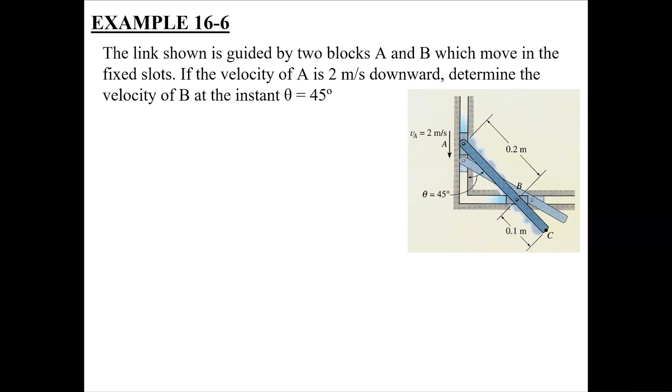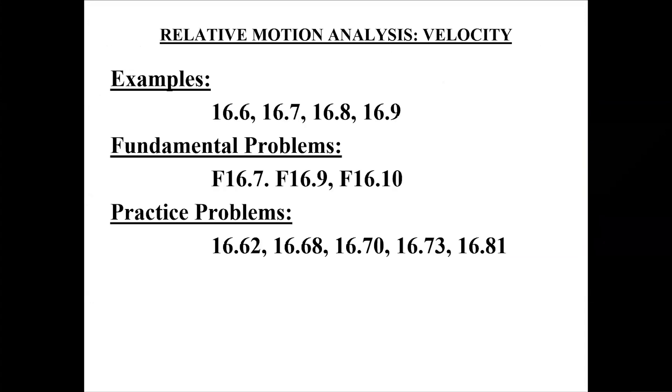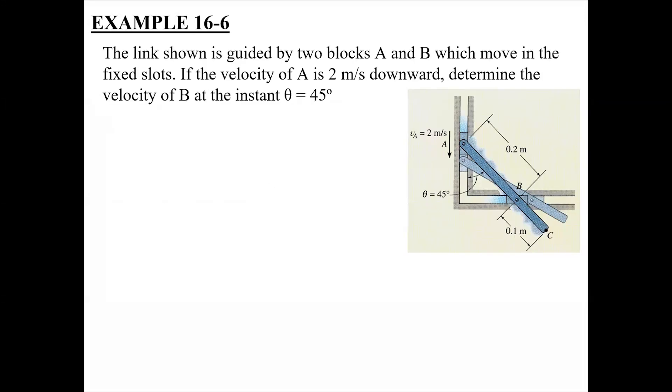The link shown is guided by two blocks A and B which move in the fixed slots. If the velocity of A is 2 meters per second downward at the instant when theta equals 45 degrees, you need to find out what is going to be the velocity of block B. Is this question clear to all of you?